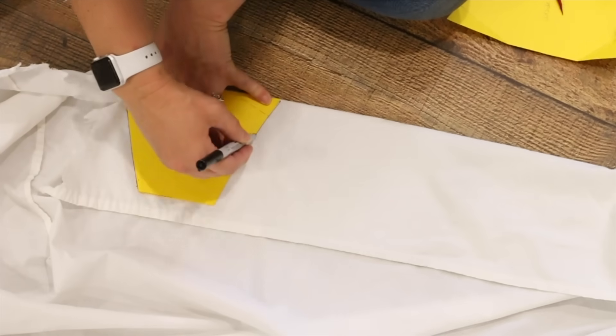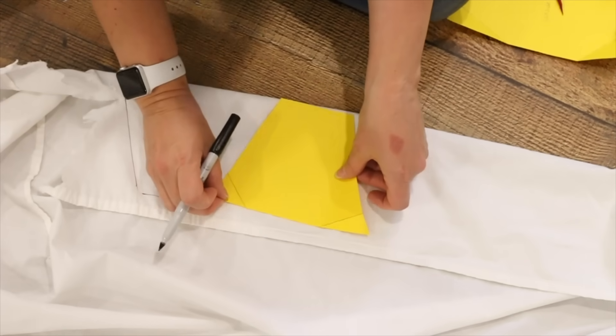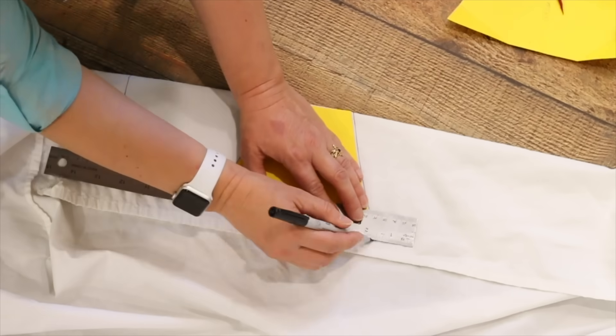Now lay your inside liner template on your liner material. If you're making a filter pocket, you'll need two liners, but only one outside piece.